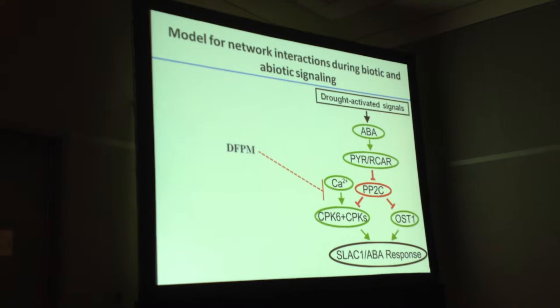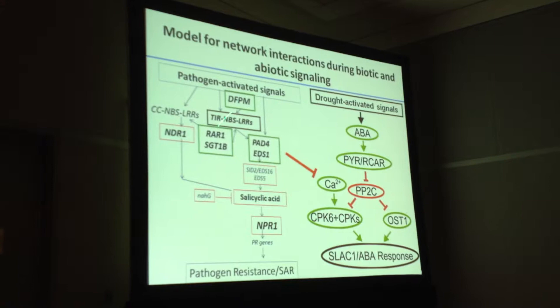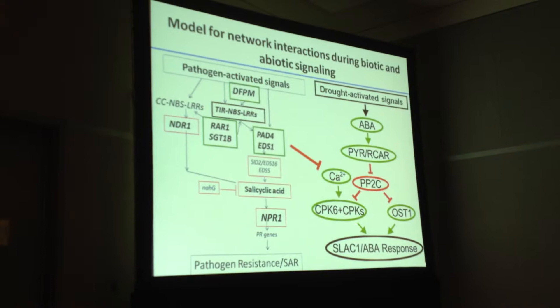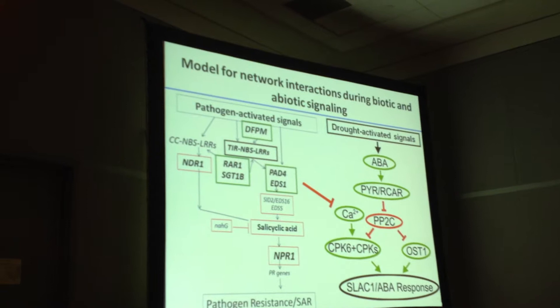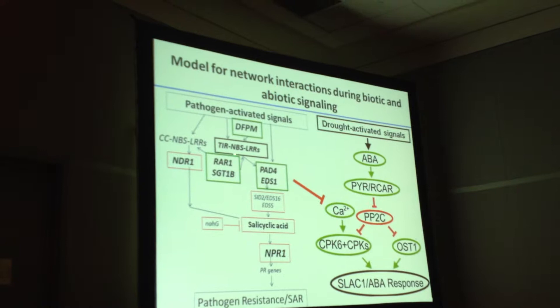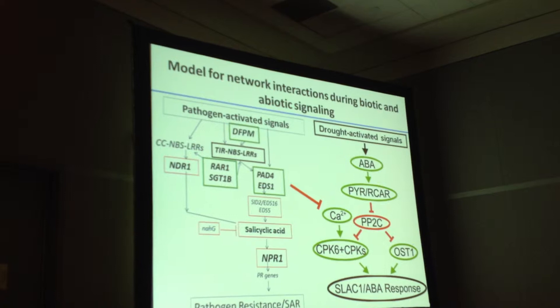Stepping back, the many immune signaling mechanisms we examined are summarized here. Green boxes indicate mechanisms required for DFPM down-regulation of ABA signaling, while red boxes — salicylic acid signaling, NDR1, jasmonic acid signaling, and PAMP signaling — are not required. One implication is there may be an R protein, a so-called NLR — nucleotide-binding LRR protein — required for DFPM signaling. However, there are far too many NLRs to work with directly.